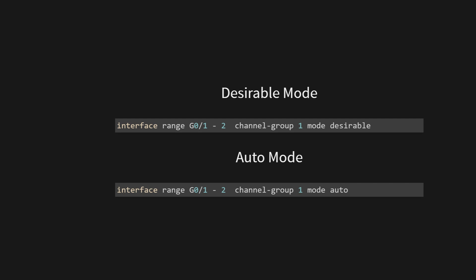Let's break down the command step by step. The interface range command sets the range for the interfaces we want to configure — both GigabitEthernet 0/1 and GigabitEthernet 0/2. By using the range option, we can configure multiple interfaces simultaneously instead of configuring them individually. The channel group 1 command specifies that we want to bundle these interfaces together into a port channel, identified by the number 1. Consistency across devices connected to this port channel is essential.